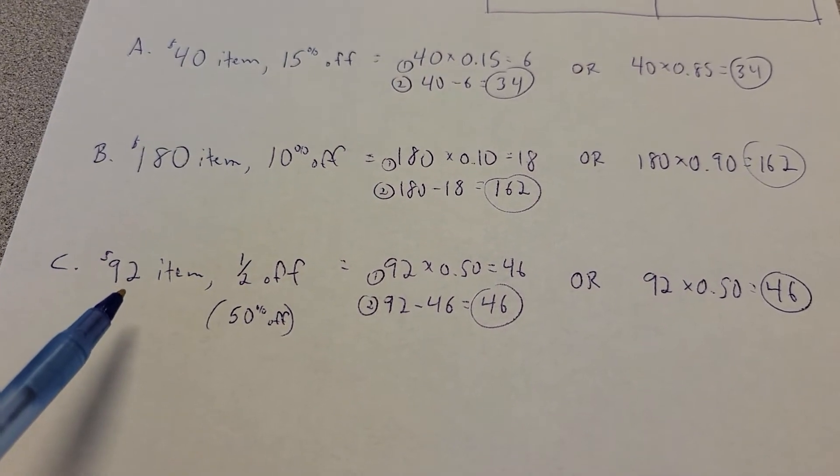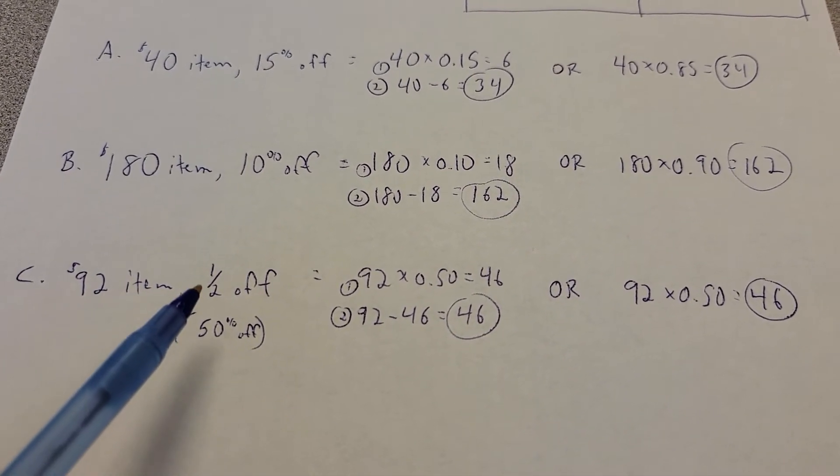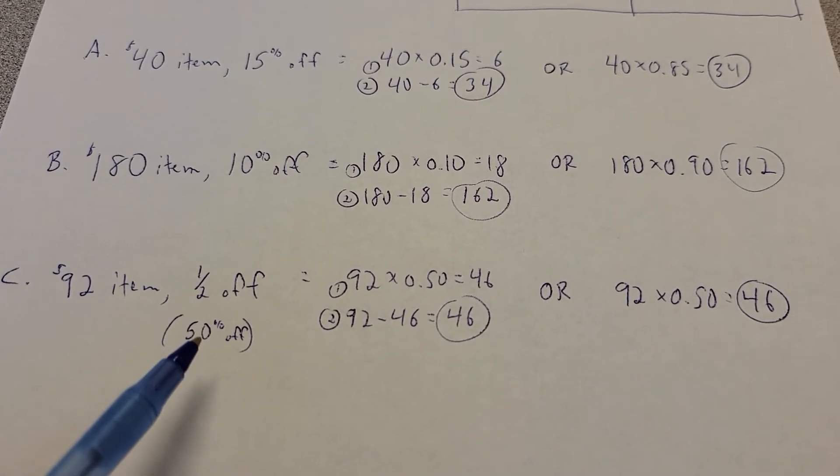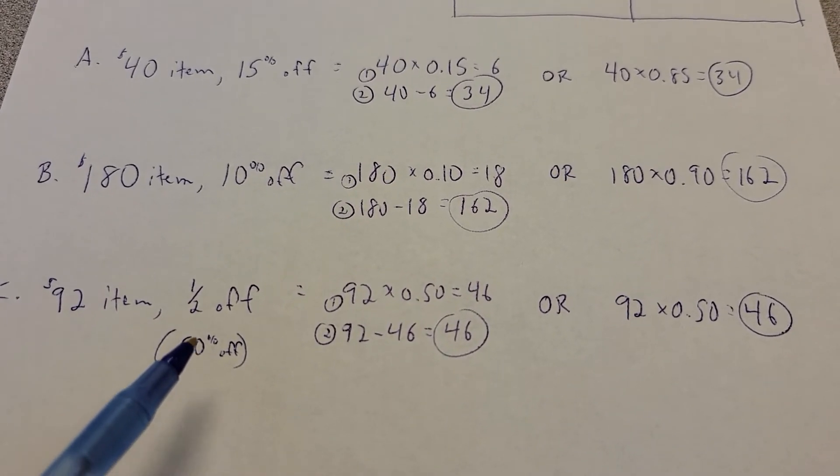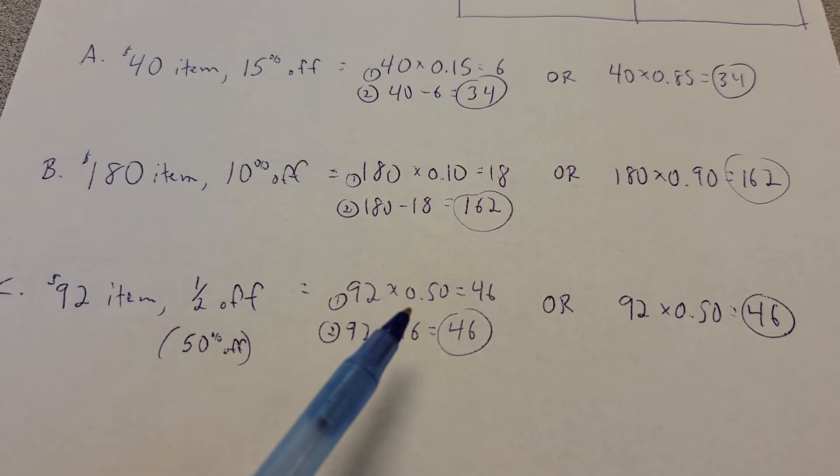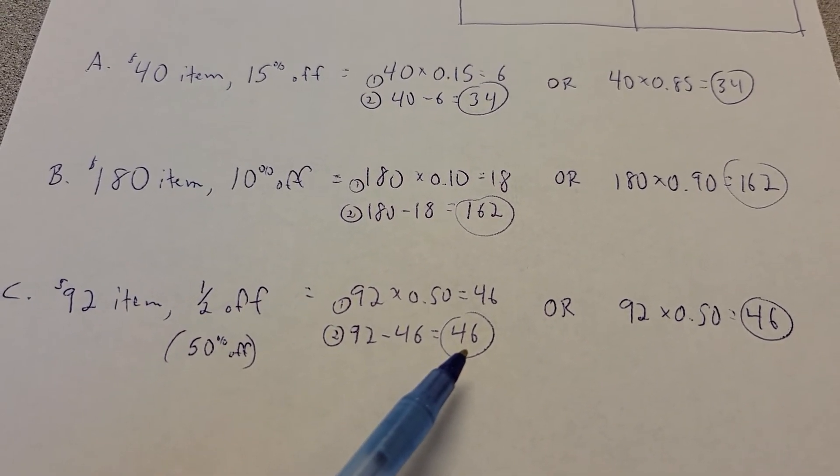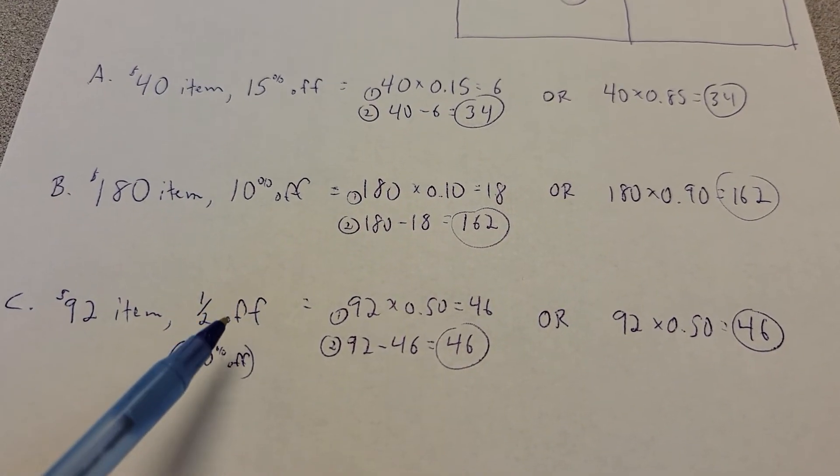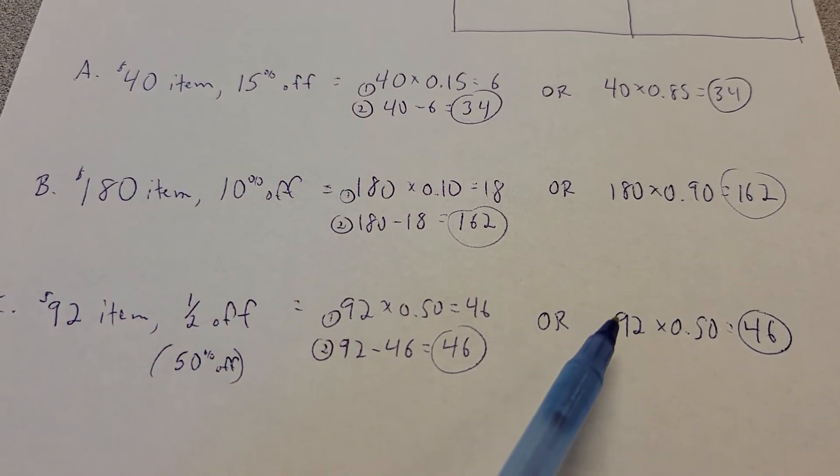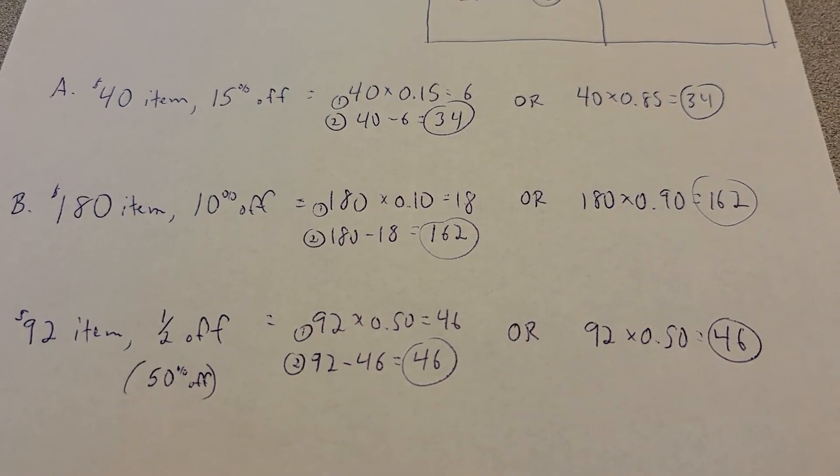If you have a $92 item, that's half off. Well, half means 50%. Remember some of our fraction decimal conversions and decimals of percents. So you could say, well, 92 times 0.50 means I'm going to save $46. 82 minus 46 leaves me $46. Or if it's 50% off, that means there's 50% left you've got to pay. 92 times 0.50 gives you $46 there as well.